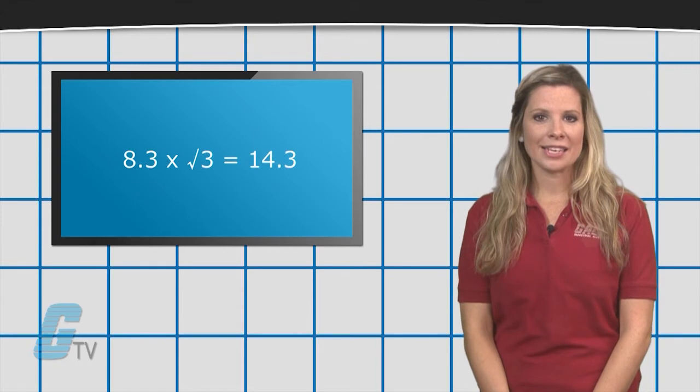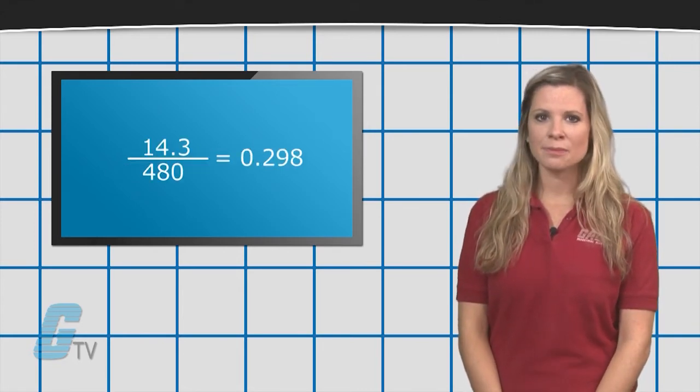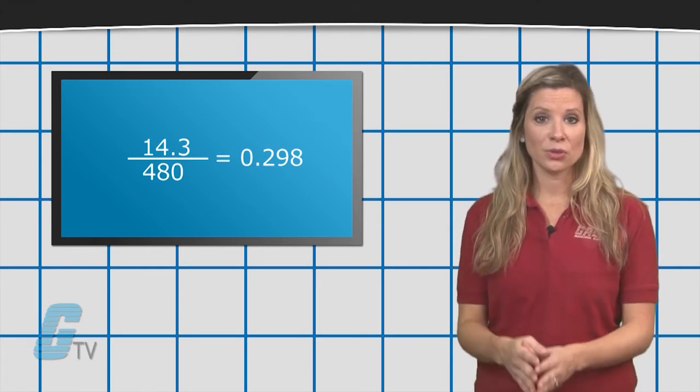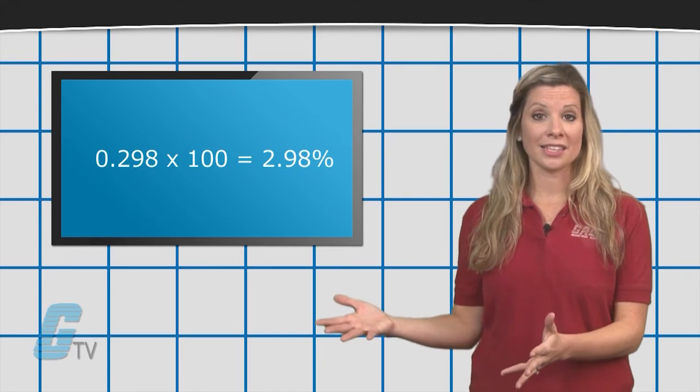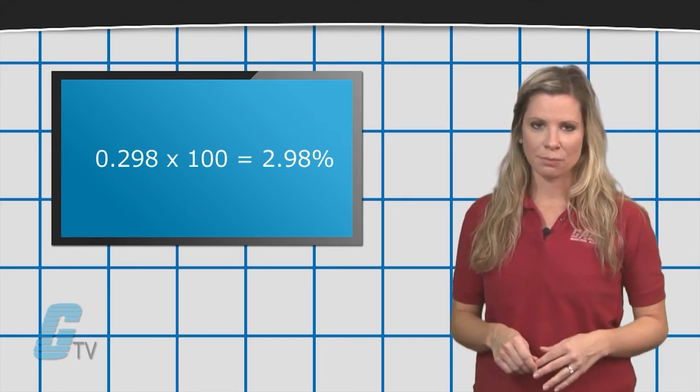I can multiply this by the square root of 3 to get 14.3 and then divide this by the voltage of 480. This will give me the number .0298. Multiplying this by 100 will show an impedance of 2.98 percent.